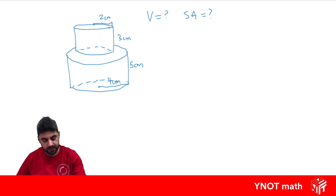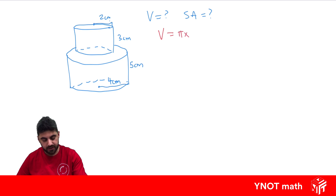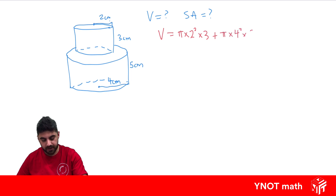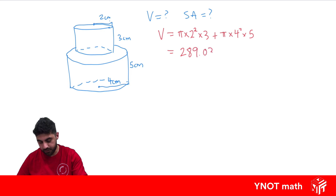The volume of a cylinder is pi r squared h, so it's the volume of the small cylinder plus the volume of the big cylinder. That gives us pi times 2 squared times 3, plus pi times 4 squared times 5. Plugging that into the calculator gives 289.03 centimeters cubed to two decimal places.